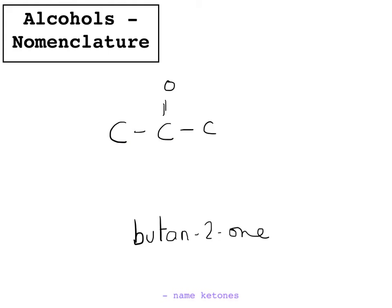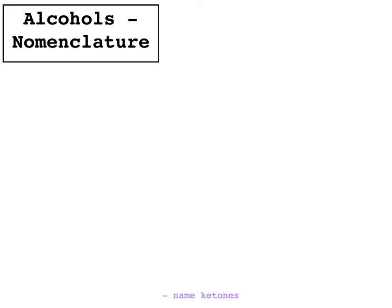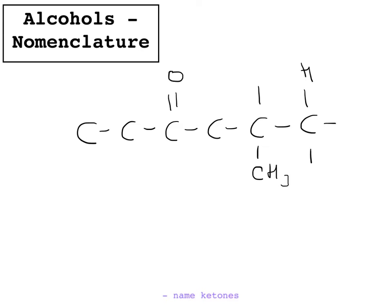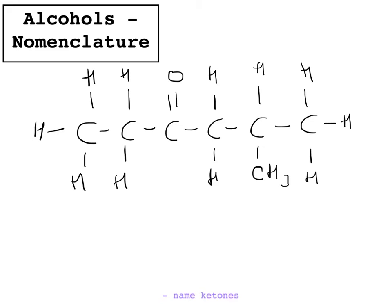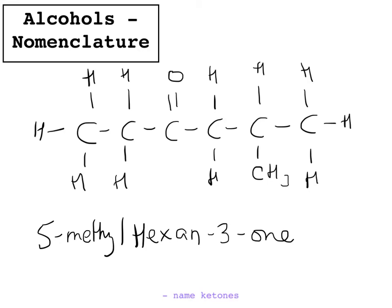If you have something like the following instead, with a methyl group on the chain as well, as with the aldehyde you name the ketone group first. You always name the functional group of the compound first in terms of the carbon number it's on, and then say where the methyl group is. There are 1, 2, 3, 4, 5, 6 carbons in the carbon chain, so this is hex-. The ketone group is on the 3rd carbon along, so it's hexan-3-one. The methyl group, based on the fact this is the third carbon, is on the 5th carbon along — so it's 5-methylhexan-3-one.